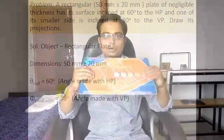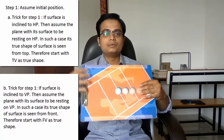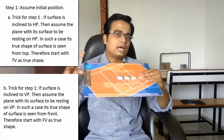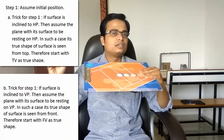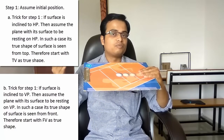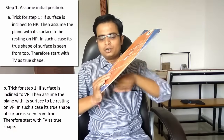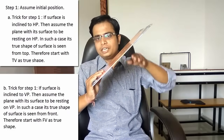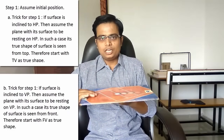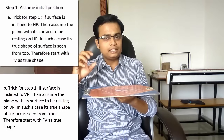This is a rectangular plate of negligible thickness, and this will be a three-step problem since both surface inclination and edge inclination have been given. For step one, always work out the surface inclination first. The surface is inclined at 60 degrees to the horizontal plane, so our assumption is to slam the entire surface onto the HP.